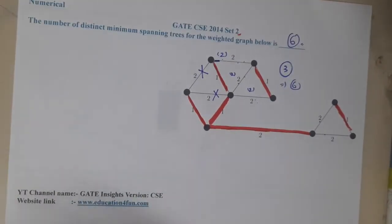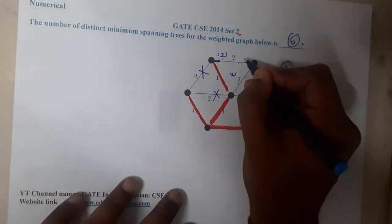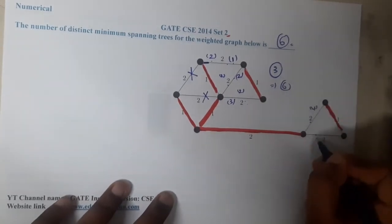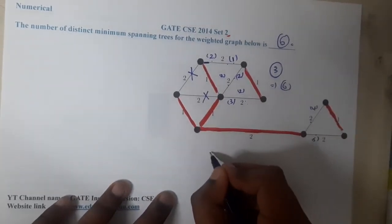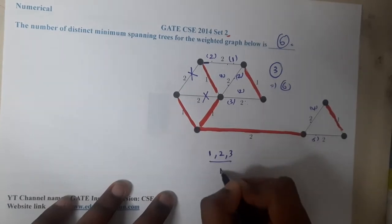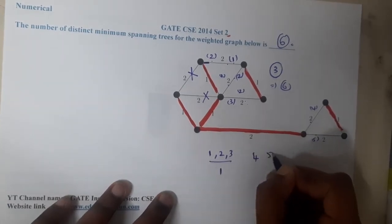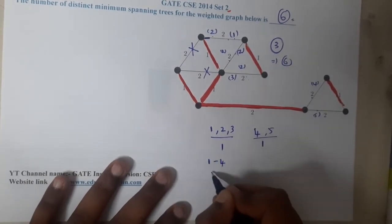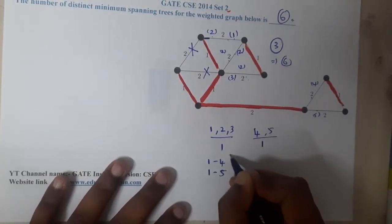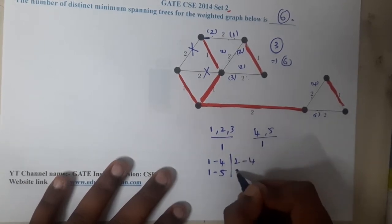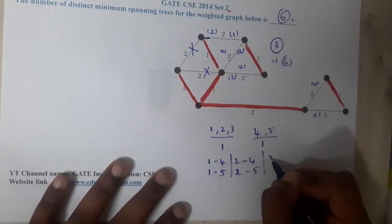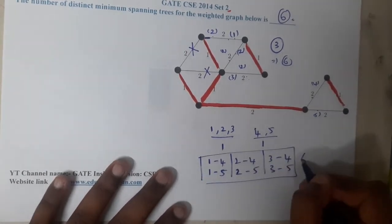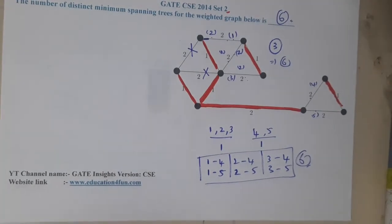For easier understanding, let us label the edges: one, two, three for the first group and four, five for the second group. Among edges one, two, and three I must select one; similarly from four and five I must select one. So the six distinct pairs are: (1,4), (1,5), (2,4), (2,5), (3,4), and (3,5). So in total there are six different pairs, which is the answer.